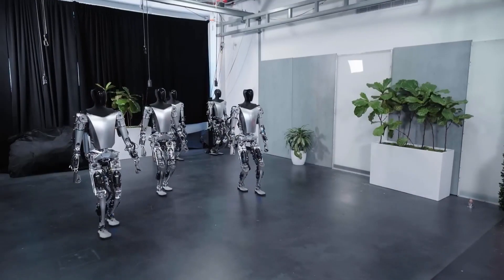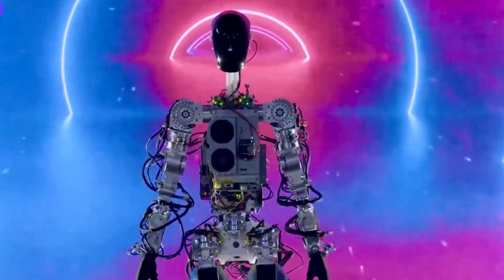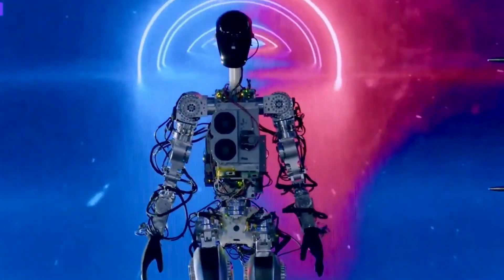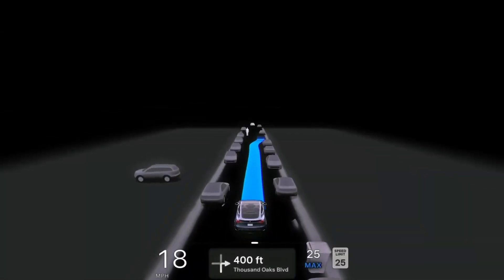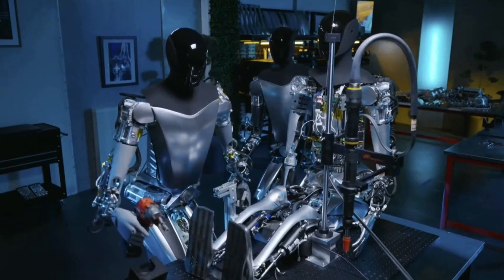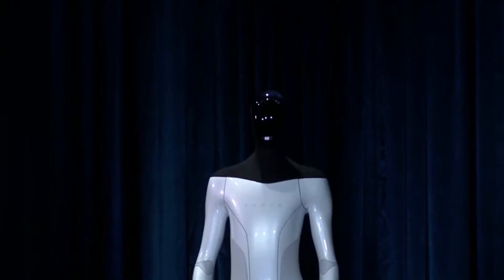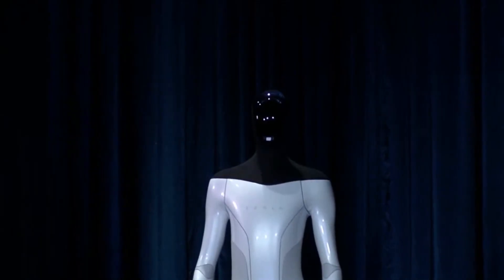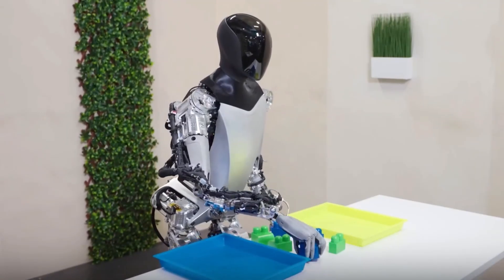Tesla is using end-to-end neural nets for its Optimus robot, which is a humanoid robot that uses the same AI system that it is developing for its cars, which enables Optimus to learn new skills with no programming involved. One of the skills that Optimus has learned using end-to-end neural nets is sorting objects by color.